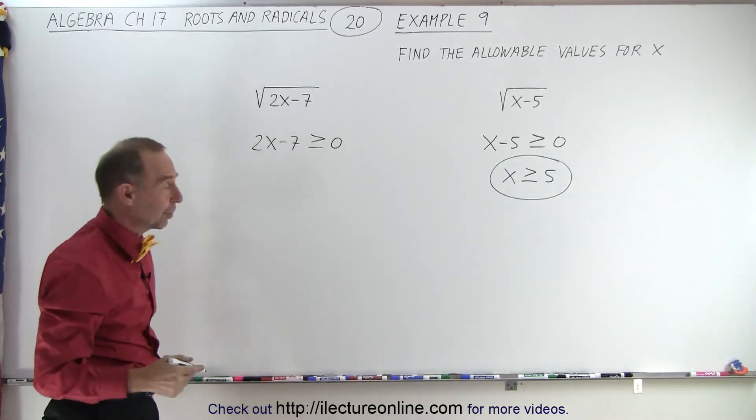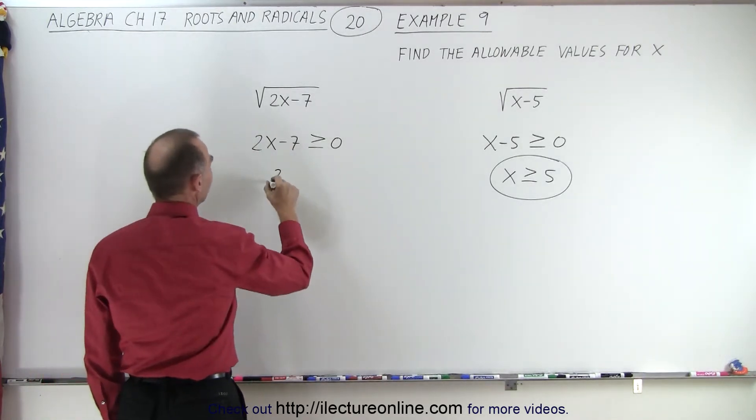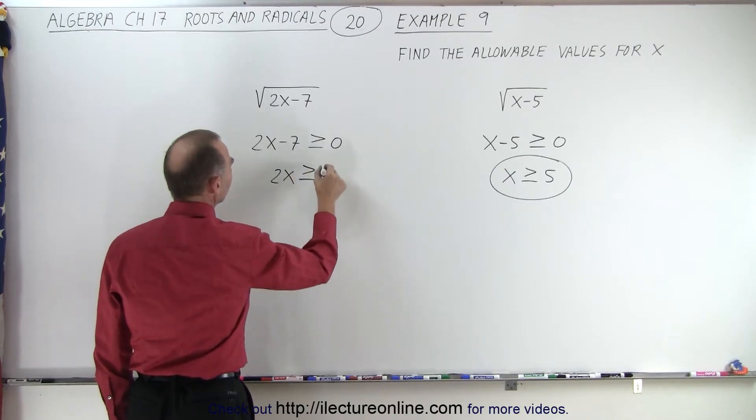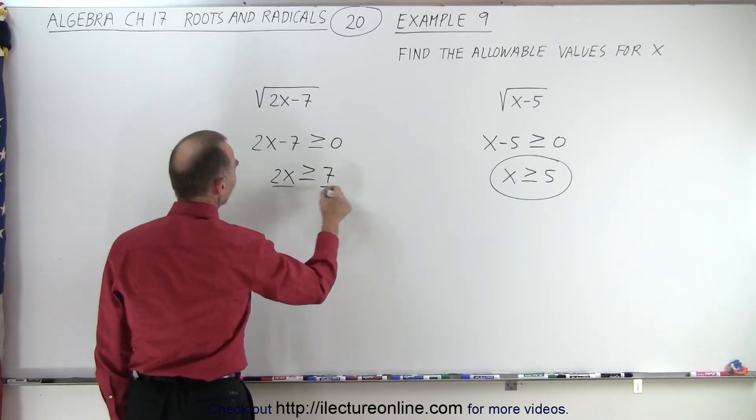That means that 2x must be greater than or equal to 7, and then dividing both sides by 2,